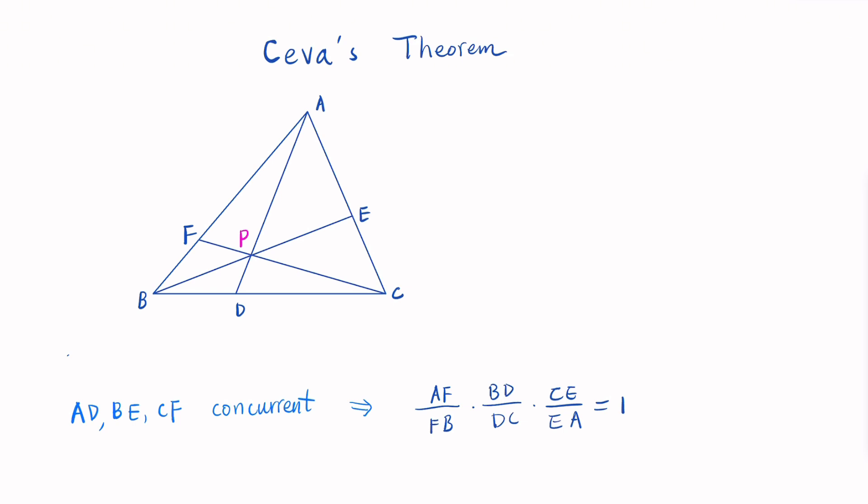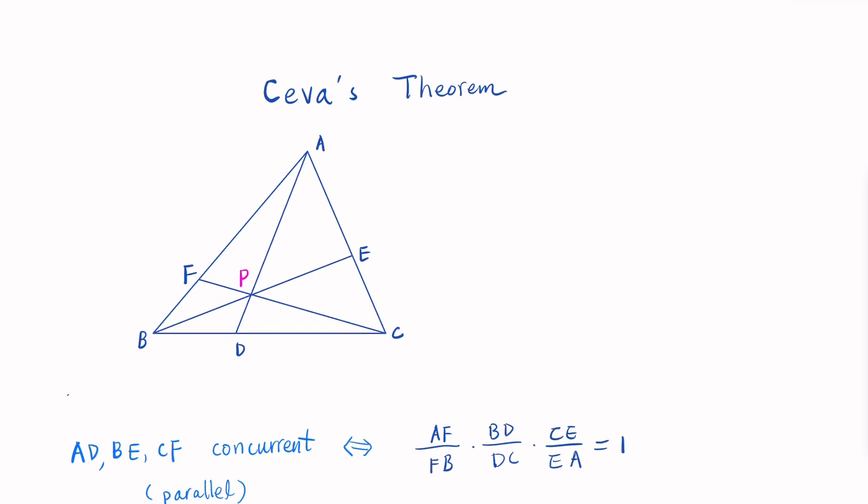And the converse is also true. So if we have this condition, the other direction is also true. Now there's a special case where the three lines are parallel. Mainly we're going to prove that if they are concurrent at point P, we want to prove that the product of the ratios is equal to 1. So we're going to use the method of area.